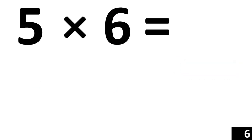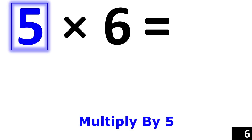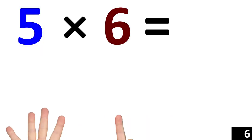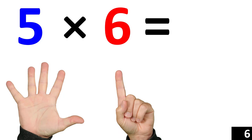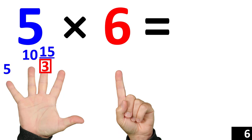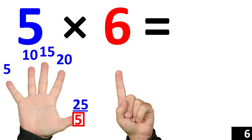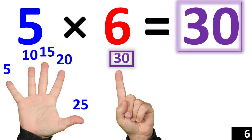For 5 times 6, we just use the rule of 5. 5 times 6 is the same thing as counting by 5, six times: 5, 10, 15, 20, 25, 30. So we see that 5 times 6 is equal to 30.